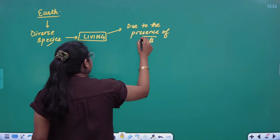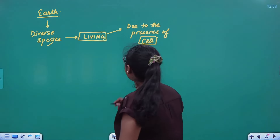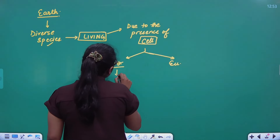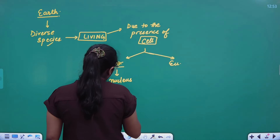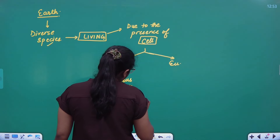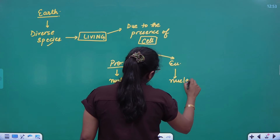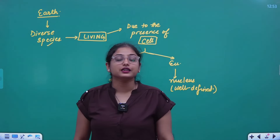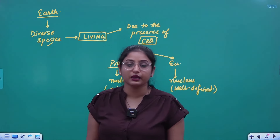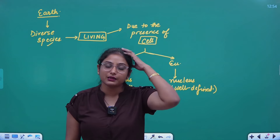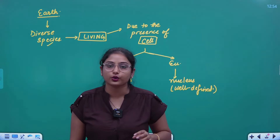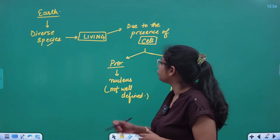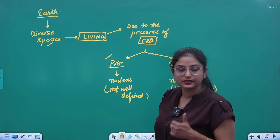We have two types of cells: prokaryotic cells and eukaryotic cells. In prokaryotic cells, the nucleus is not well-defined, whereas in eukaryotic cells there is a proper well-defined nucleus. We have classified two types of cells on the basis of the nucleus because the nucleus is the control center — just as my brain controls what I speak, the nucleus plays an important role in the cell. On that basis, we have classified prokaryotic and eukaryotic cells.